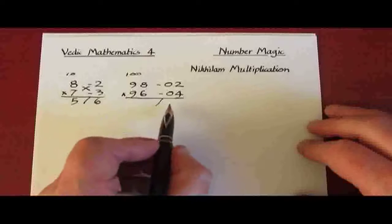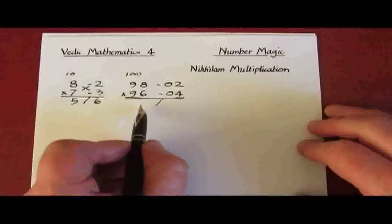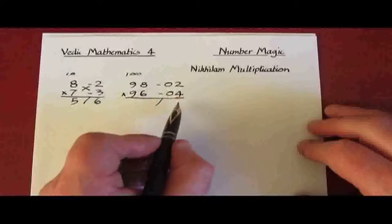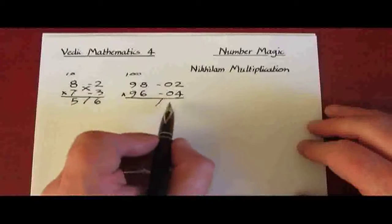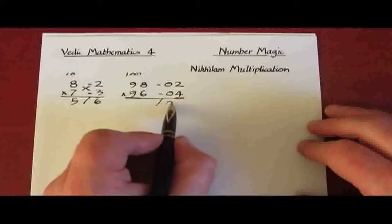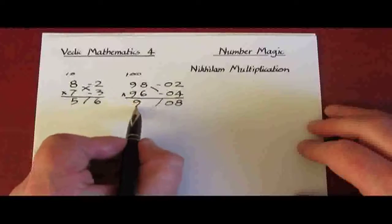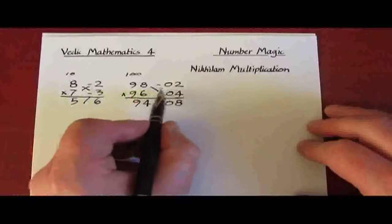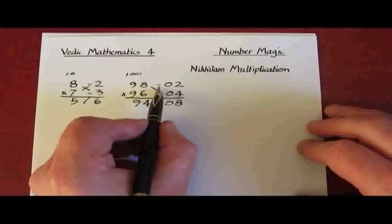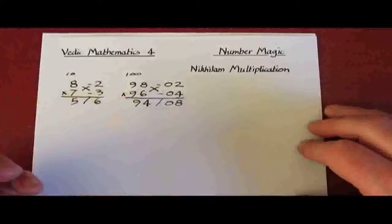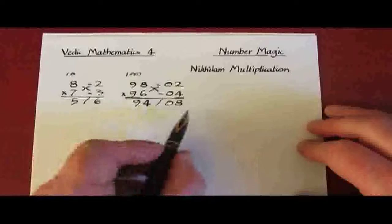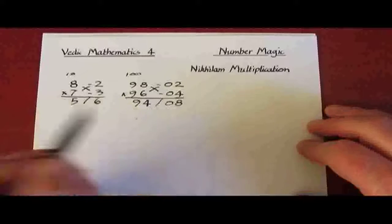Again the answer comes in two parts, a right hand and a left hand. And for the right we multiply the two deficiencies together. So 2 times 4 is 08. And then cross subtract, 98 take away 4 is 94. We could use the other way, 96 take away 2 just to check, and sure enough we get to the answer 9408.